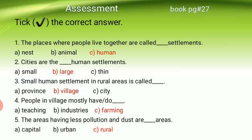Number three: small human settlements in rural areas are called blank. Option A province, option B village, option C city. The right option is village — V-I-L-L-A-G-E. Small human settlements in rural areas are called village.